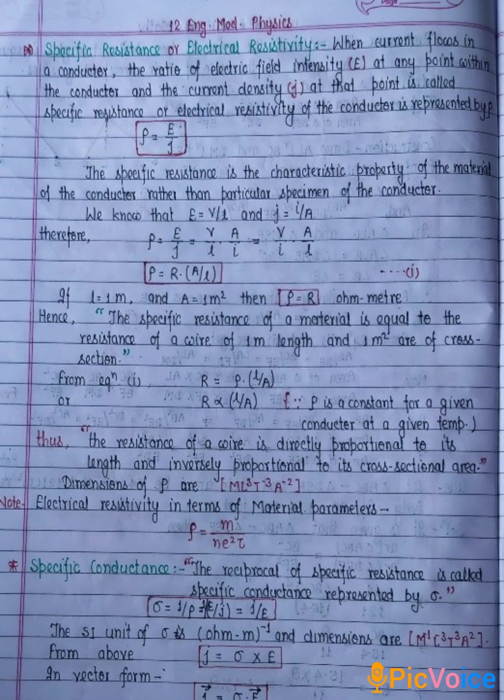Dimensions of rho are ML³T⁻³A⁻². Note: Electrical resistivity in terms of material parameters.